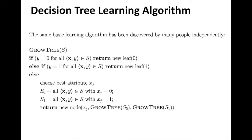The first condition is: if Y equals zero for all (X, Y) belonging to S that has been passed down to this particular call of GrowTree. Because it's recursive, you are going to pass different subsets of data instances when you recursively call this function. If for all instances in S, Y is zero, then you return a leaf node with classification value zero, and you don't split that further.